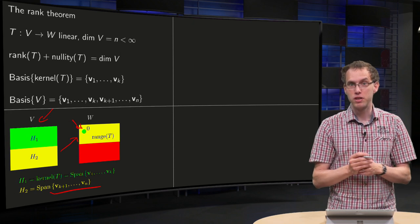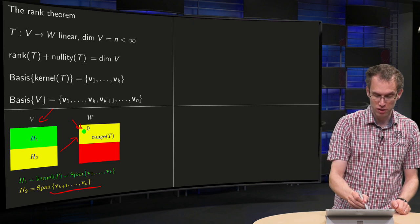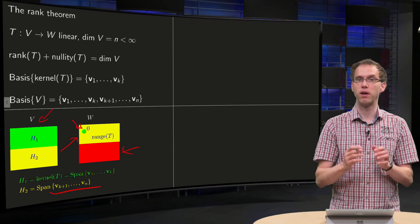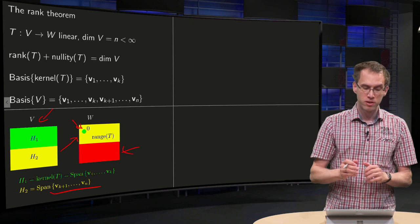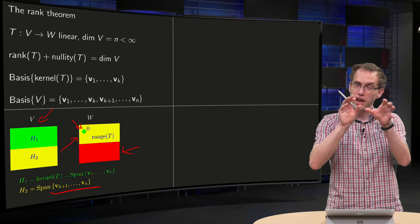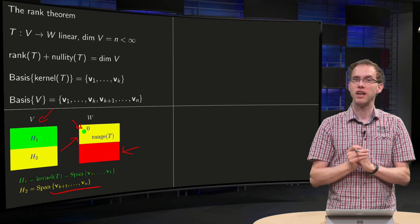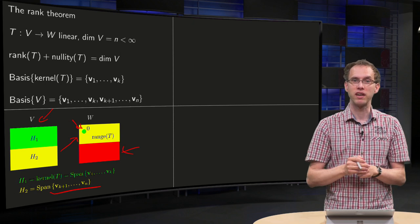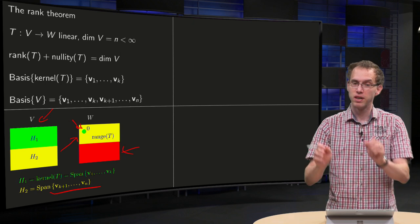So the span of all those other vectors, and that part is mapped over here to the yellow part to the range of T. And now, there can be still some part that we can't reach in W, that's the red part. So, V consists of H1 and H2, H1 mapped to the zero vector, and H2 mapped to the range of T.